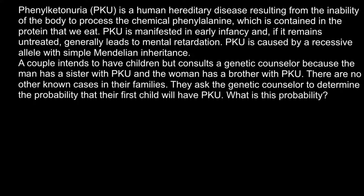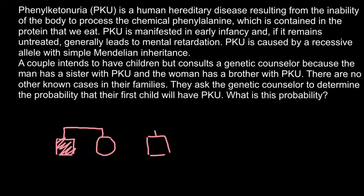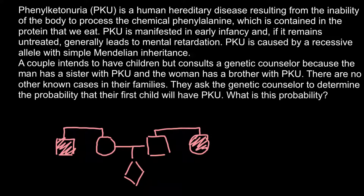So what we know about this family that came for consultation: we have a female and a male. The female had a brother who is affected with this genetic disorder, and the male had a sister who is affected. This couple wants to marry and they're wondering what are the chances that their child would be affected. I'm using this sign to designate their child because it is an unborn child and the gender is not known yet.